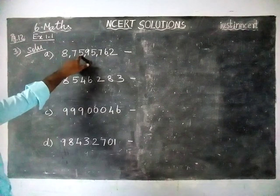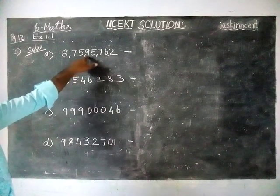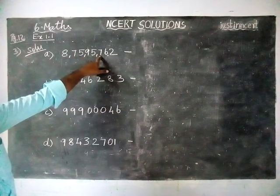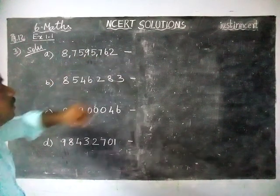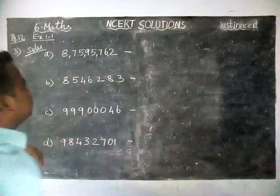So the first number is eight crores, seventy-five lakhs, ninety-five thousand, seven hundred sixty-two. We are going to write it as a number name.